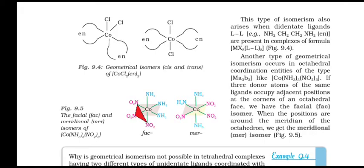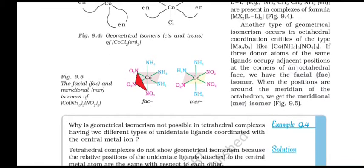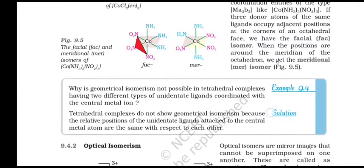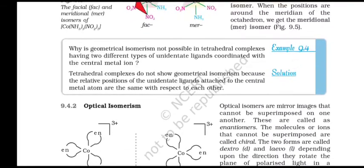Another type of geometrical isomerism occurs in octahedral coordination entities of the type MA3B3, e.g. [Co(NH3)3(NO2)3]. If three donor atoms of the same ligand occupy adjacent positions at the corners of an octahedral face, we have the facial (fac) isomer. When the positions are around the meridian of the octahedron, we get the meridional (mer) isomer.